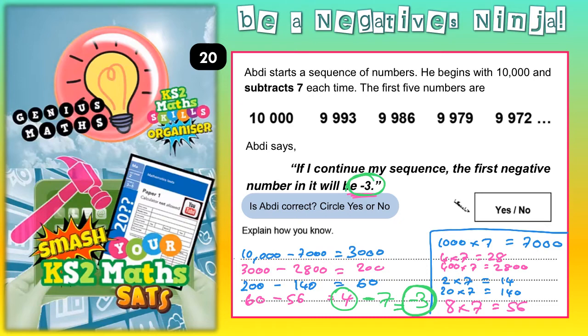So as for the question is Abdi correct, circle yes or no, we should be circling yes. Because the first negative number in the sequence is minus 3.